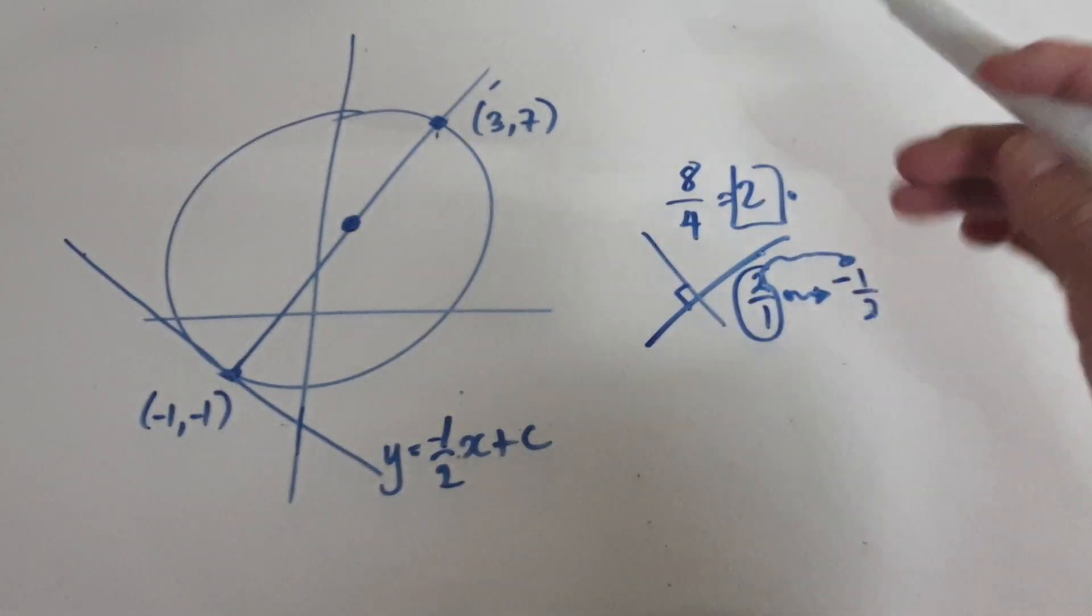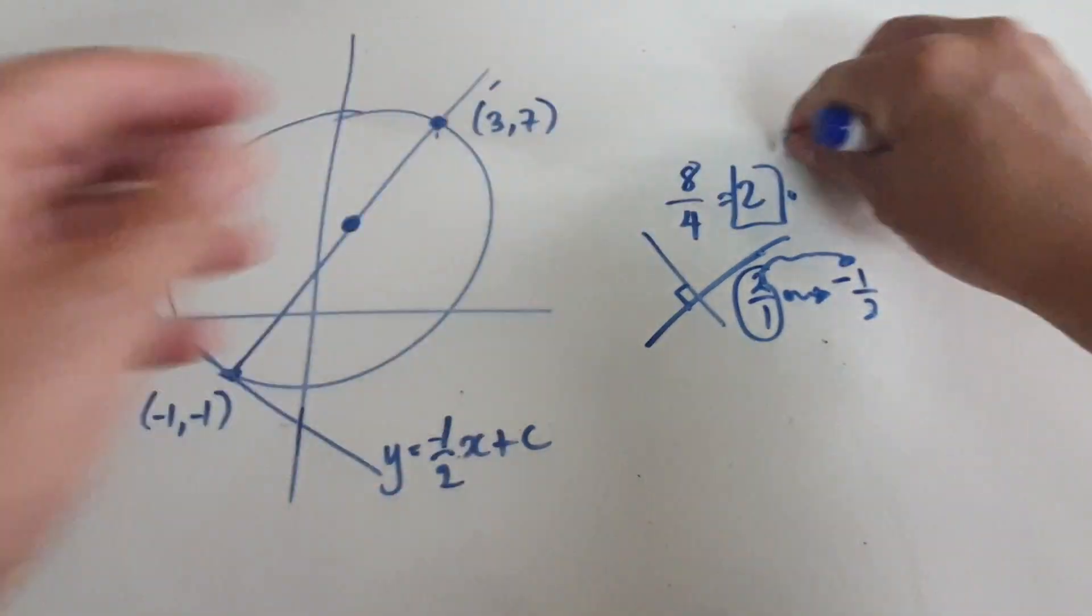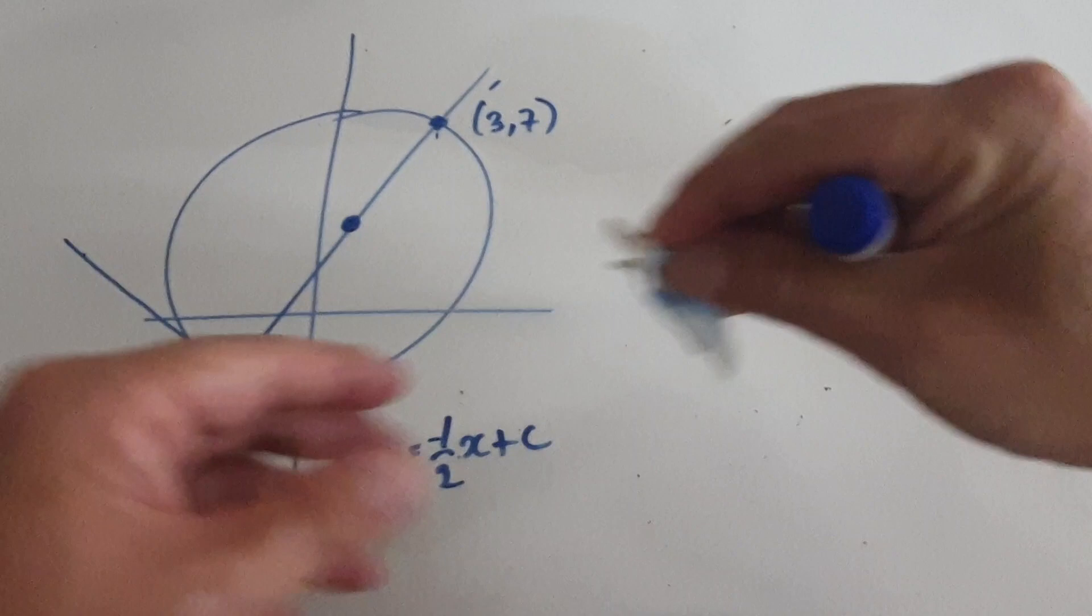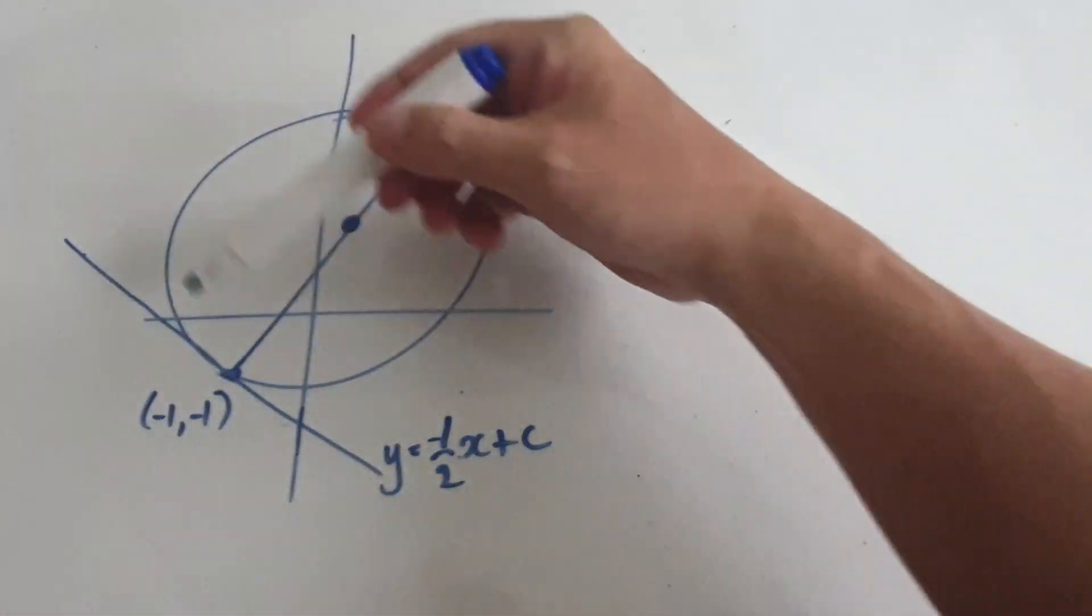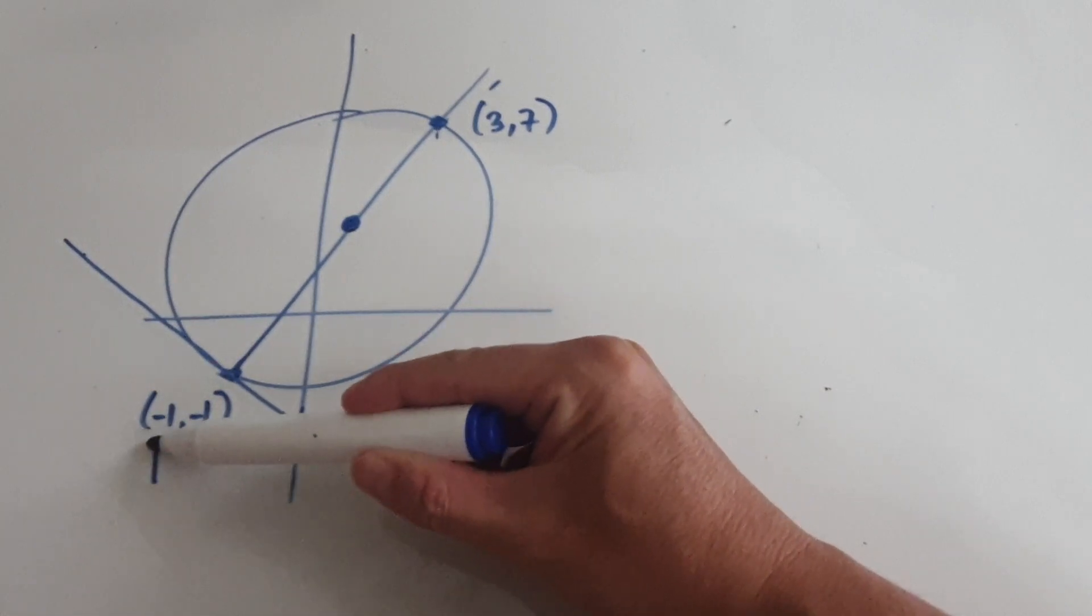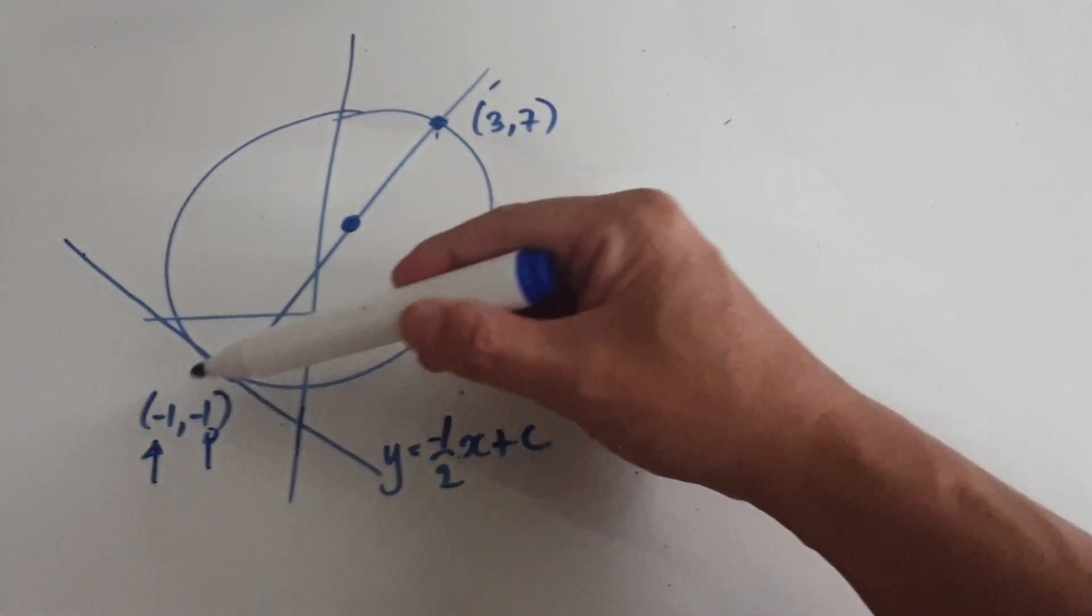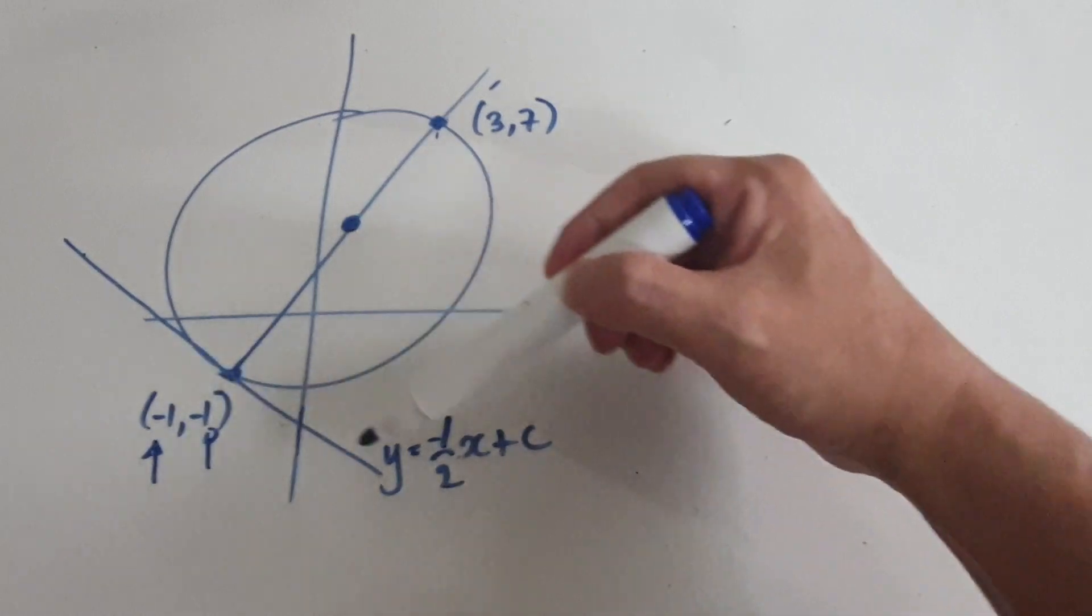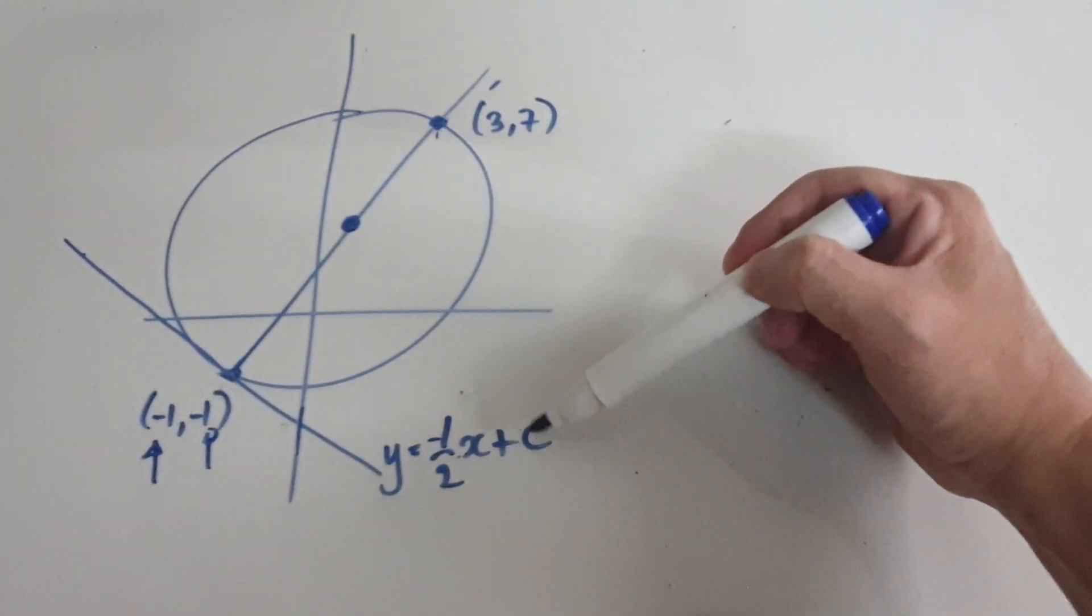We need to work out C. So to work out C, we need one particular point on this tangent line. We know one particular point. We know this point here. So this is your X, and this is your Y. So put this into the X, put this into the Y, and then work backwards to find C.